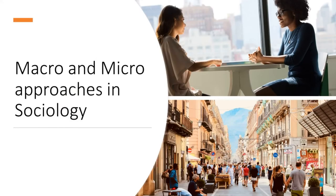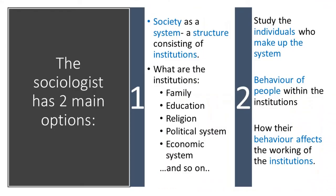Macro and micro approaches in Sociology. If you are aware of these terms, you should understand that when we speak of macro, we are considering the whole — the system as a whole — whereas micro refers to the individual parts within that whole. When we study society, what do we mean by society and what does society consist of?